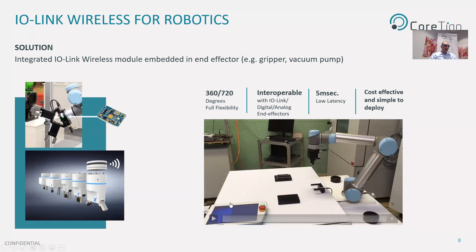In this video, you can see the IO-Link gripper that used to have cables on the collaborative robot, now with no cables running along the arm of the robot — free motion and no cables. The master is connected directly to the controller of the robot. Having such a wireless master also enables you to connect additional wireless devices or sensors in the same robot area, communicating with numerous devices in parallel, so even more value is gained.